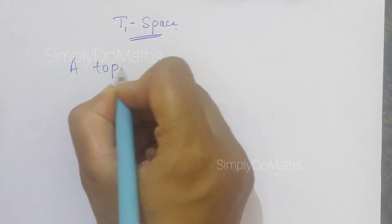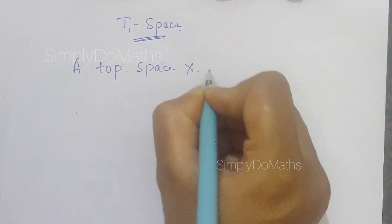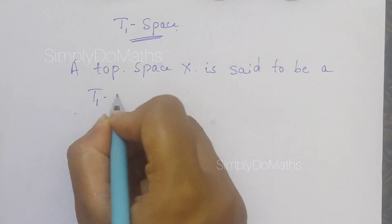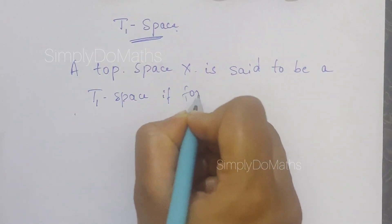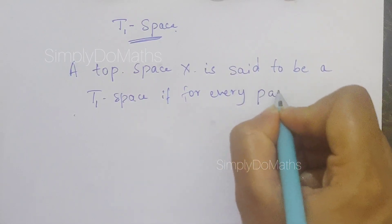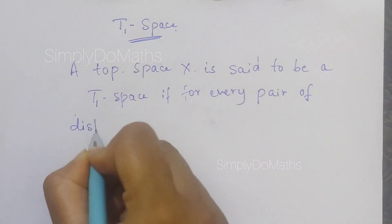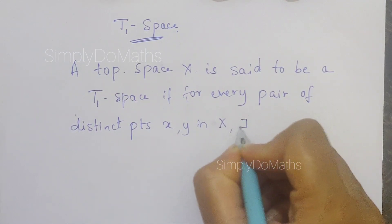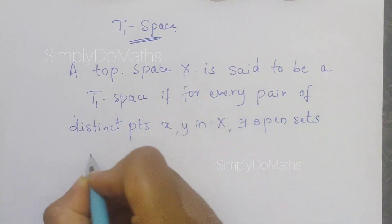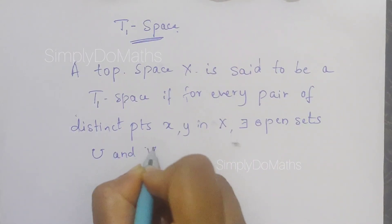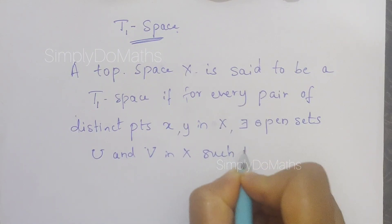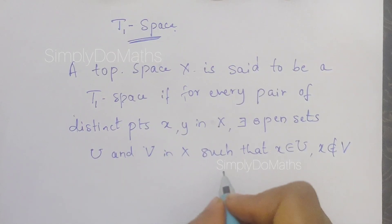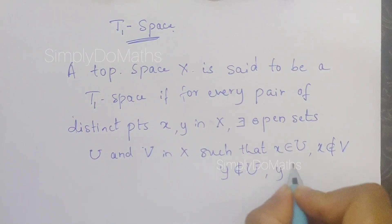A topological space X is said to be a T1 space if for every pair of distinct points x and y in X, there exist open sets U and V in X such that x belongs to U, x doesn't belong to V, and y doesn't belong to U but y belongs to V.